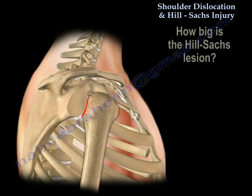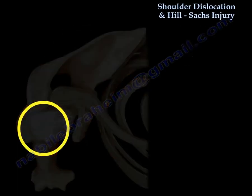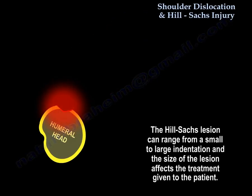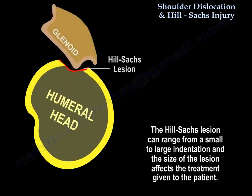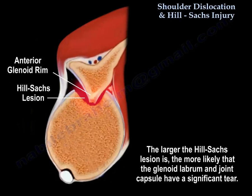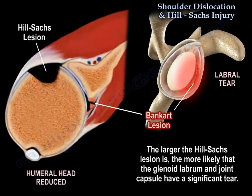Regarding the size of the Hill-Sachs lesion: it can range from a small to a large indentation, and the size of the lesion can affect the treatment given to the patient. The larger the Hill-Sachs lesion, the more likely the shoulder will be unstable and will dislocate again, becoming a recurrent dislocation. The larger the lesion, the more likely the glenoid labrum and joint capsule have a significant tear.